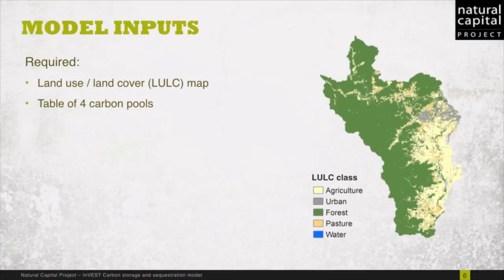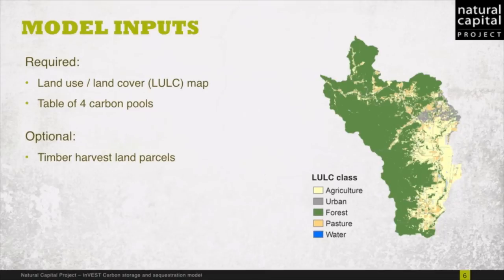There are two required inputs to the carbon model: a land use land cover map, as shown in the image to the right, and a table of carbon pool values for above ground, below ground, soil, and dead wood, corresponding to each of the land use land cover classes in the map. Optionally, to include the fifth carbon pool of harvested wood products, spatial information about timber harvesting is required.